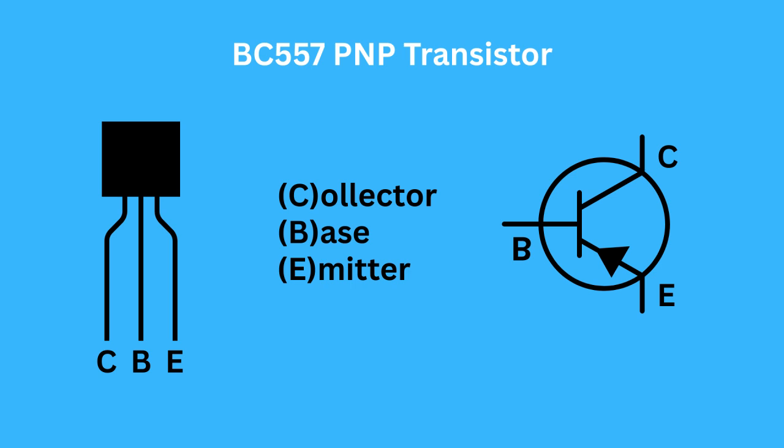For a BC557, you need to reduce the electricity flowing to the base leg. When you do that, it opens the gate and allows a larger amount of electricity to flow from the emitter leg to the collector leg. Instead of needing a small push of electricity to the base like the BC547, the BC557 needs the base to be pulled down or have less electricity to let the main current flow.